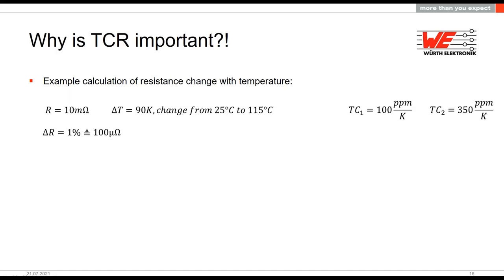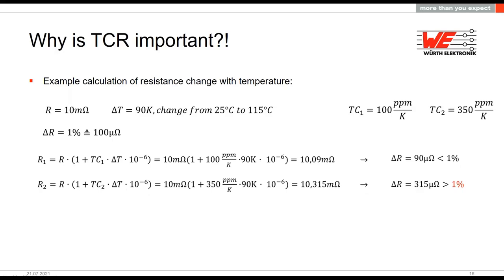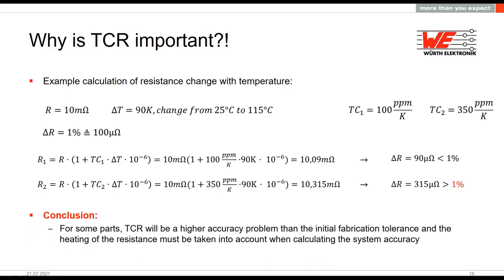This example: our 10 milliohm part has 1% tolerance. We calculate what happens if we heat up 90 degrees hotter than ambient and calculate the impact of TCR at 100 ppm and 350 ppm per degree Celsius. With 100 ppm, we still don't have a big issue because the resistance deviation due to heating is still less than the tolerance. When we look at 350 ppm parts per million change, we might run into problems if we ignore how warm the resistance will get. In this case, the deviation due to temperature is more than three times the possible deviation from the initial tolerance.